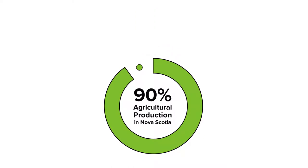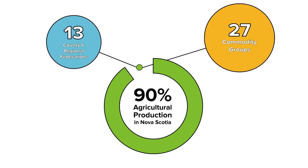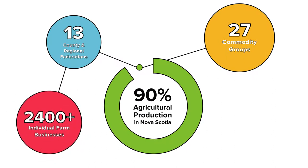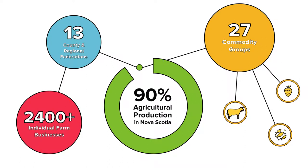Our organization includes representation from 13 county and regional federations and 27 recognized agricultural commodity groups. We bring together over 2400 individual farm businesses representing all aspects of primary agriculture in the province.